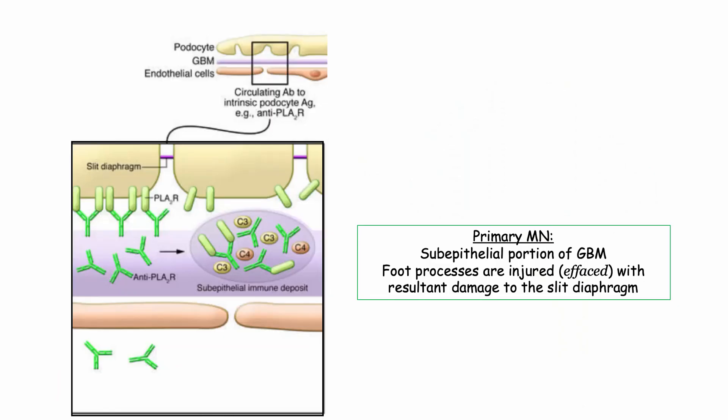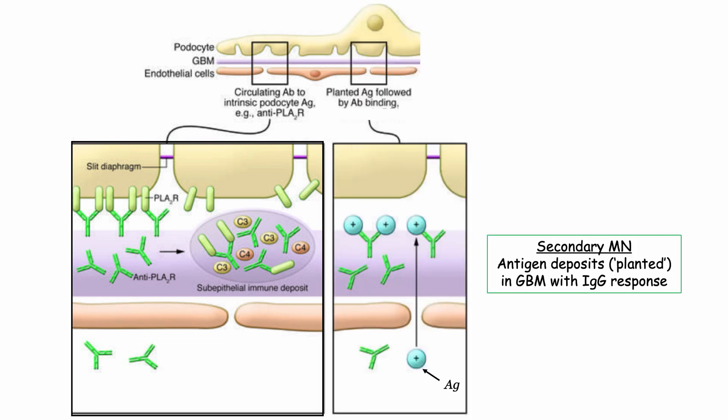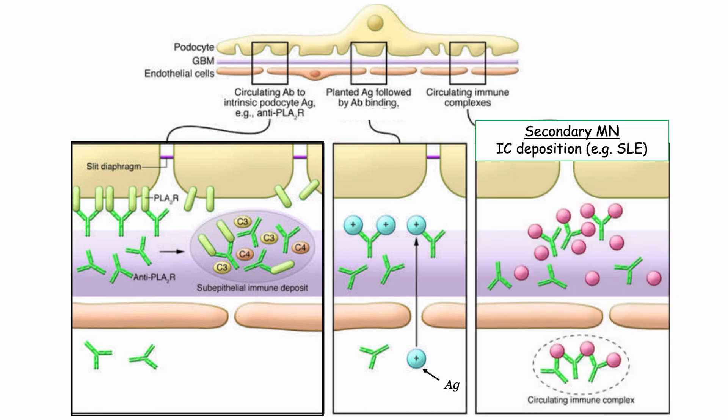Here is a graphic highlighting the phospholipase A2 receptor and immune complexes deposited in the subepithelial space. The foot processes are damaged, resulting in loss of charge barrier and damage to the slit diaphragm. Secondary causes include hepatitis B surface antigen and circulating immune complexes as seen in lupus — all depositing in the subepithelial space, provoking immune-complex injury. Why they deposit in the subepithelial rather than subendothelial space is not fully understood.